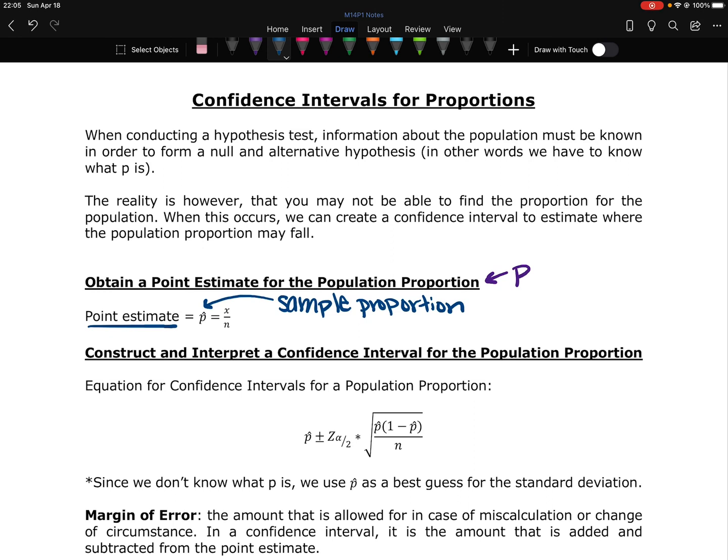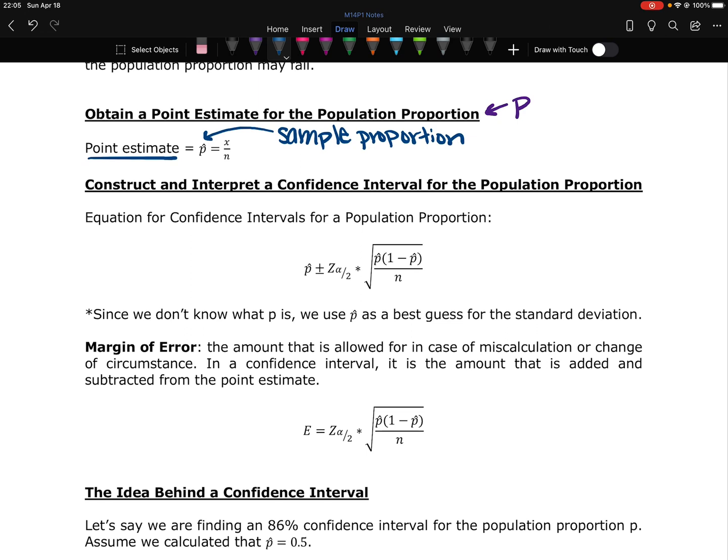So the equation for a confidence interval for a population proportion: we start with our point estimate, p hat. And then we're going to add and subtract. So we're going to do this equation twice, and by adding and subtracting, that's going to give us a range of values. That's going to give us this interval. And then we're going to get a z-score. This z-score is called the critical value. And it is based on alpha over 2. And we'll talk more about that in a few minutes.